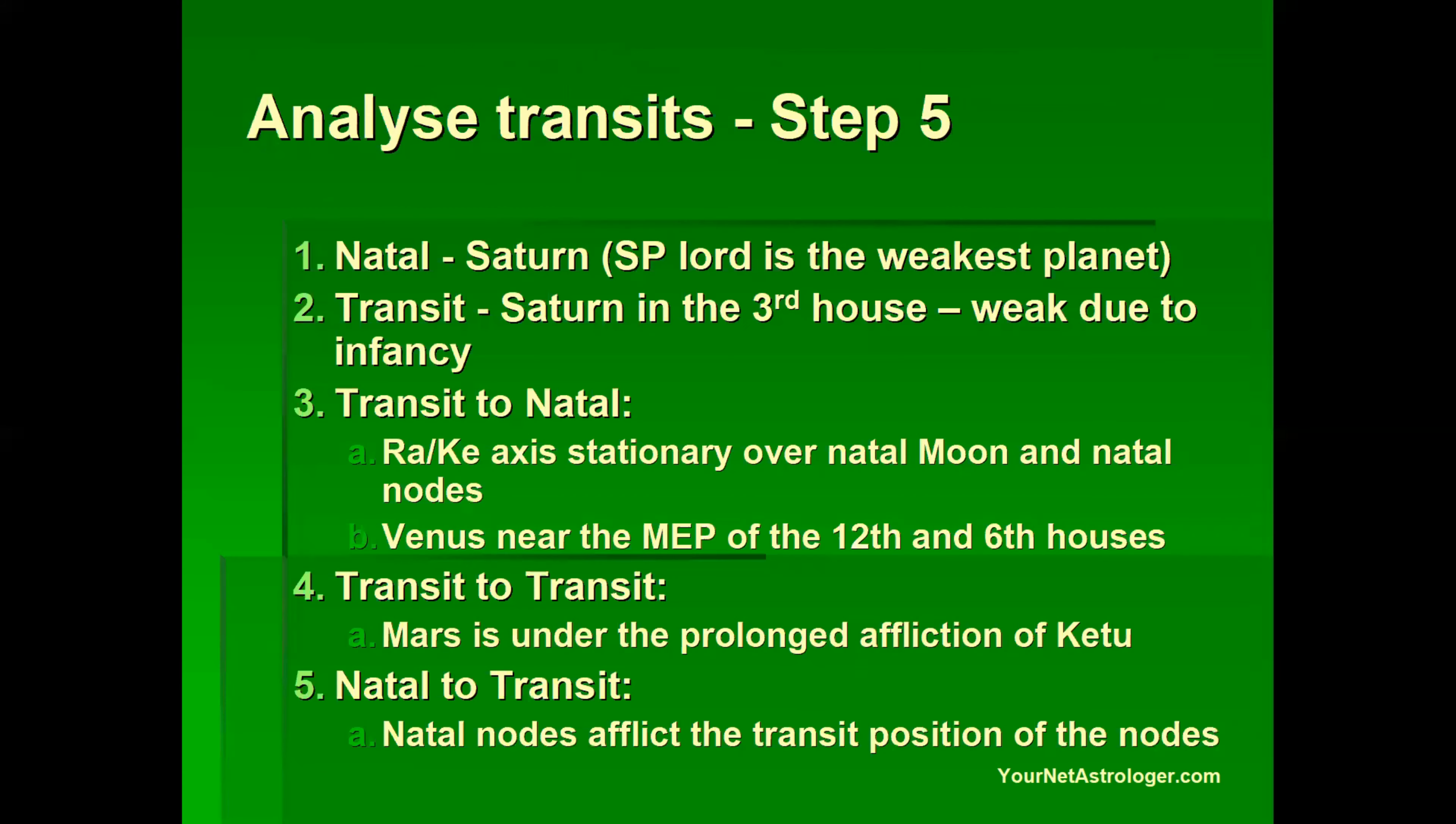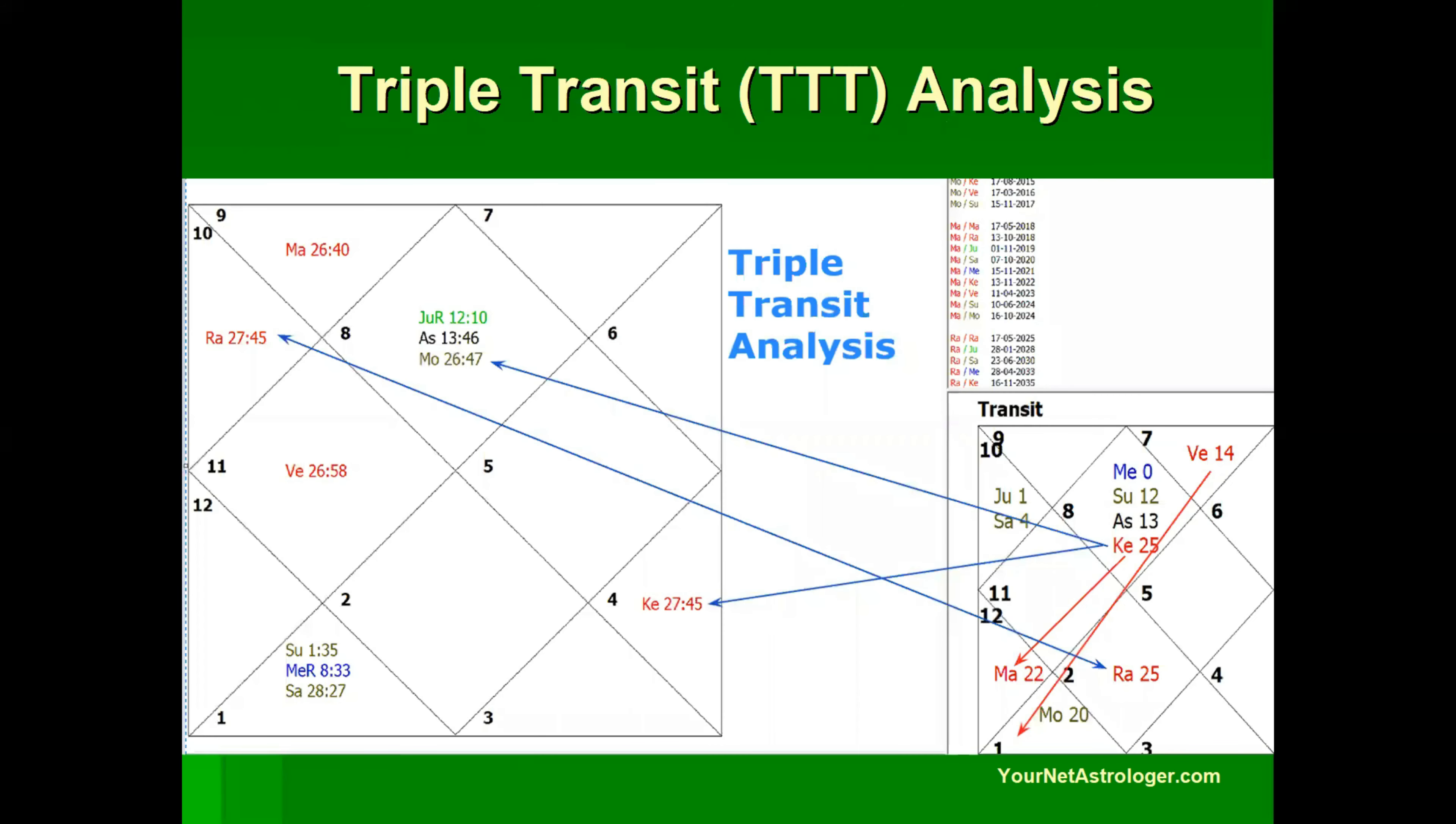So next we move on to analysis of transit. Here there are three dimensions: transit to natal chart analysis, transit to transit analysis and natal to transit analysis. Let's see this graphically, the triple transit analysis of this chart on a particular date is analyzed like this.